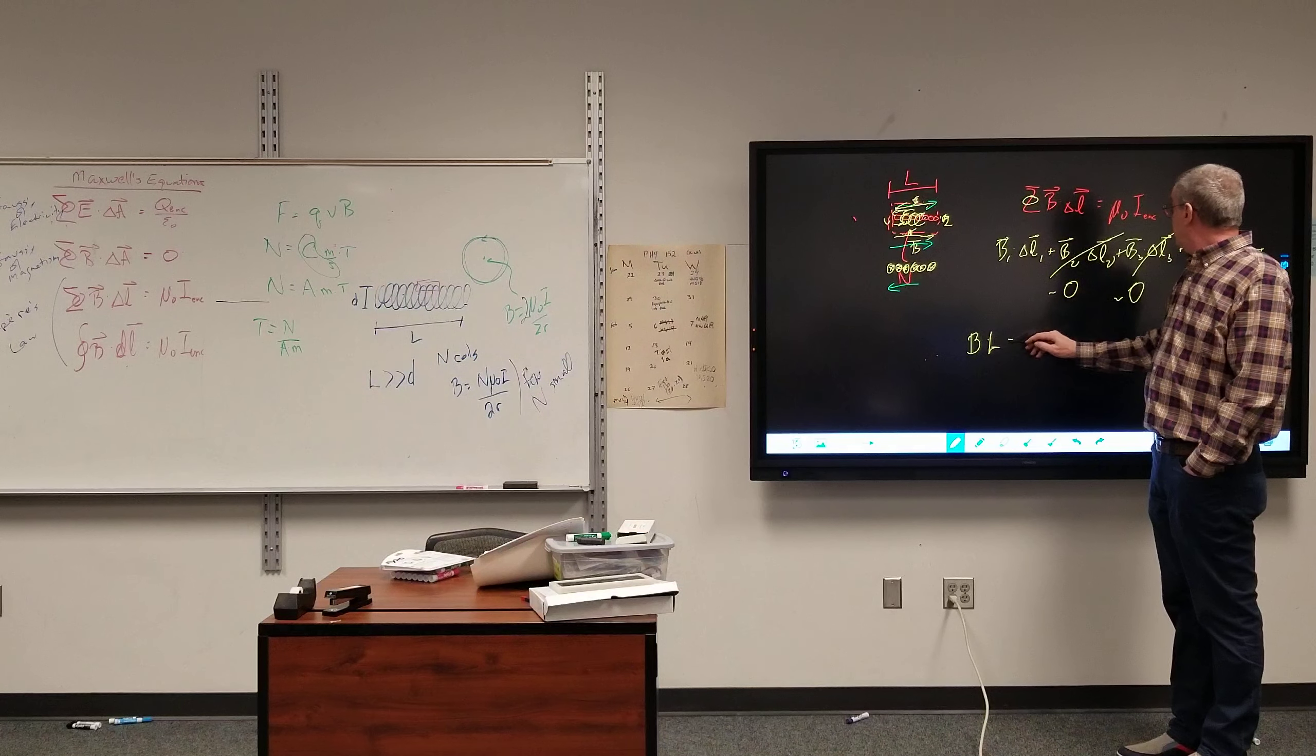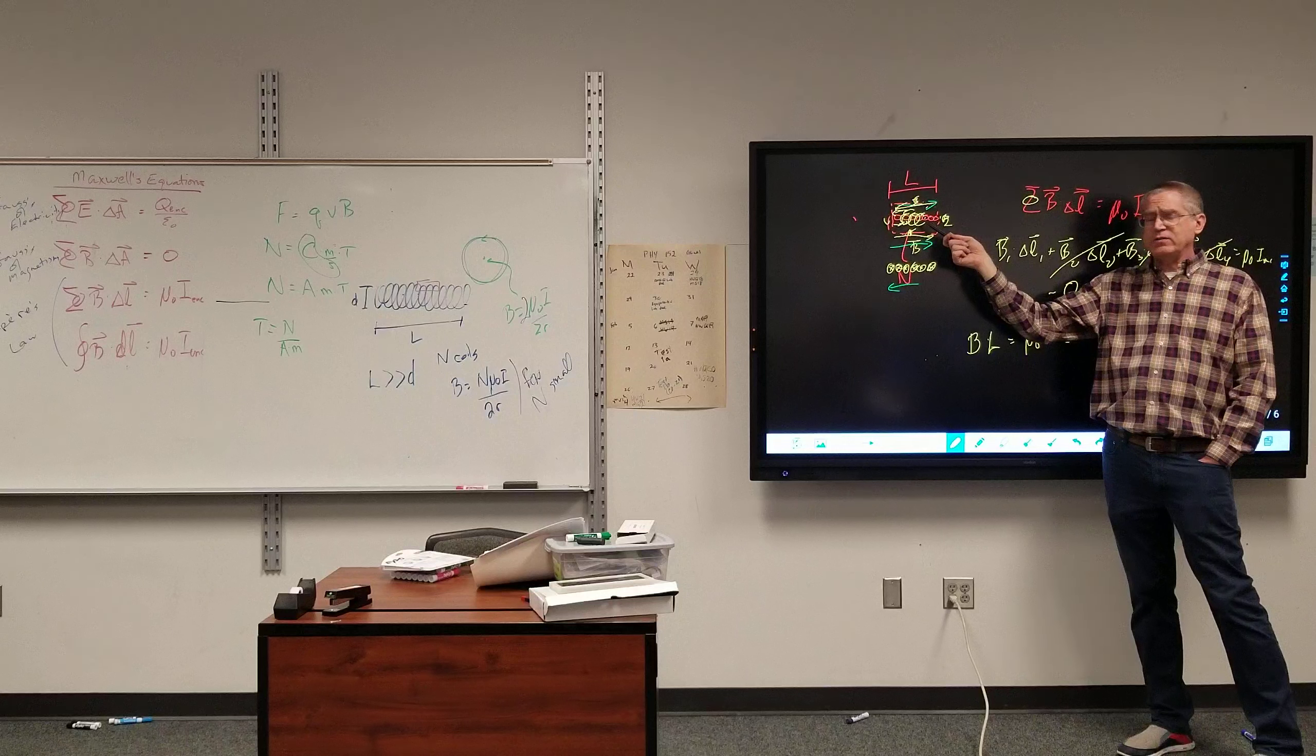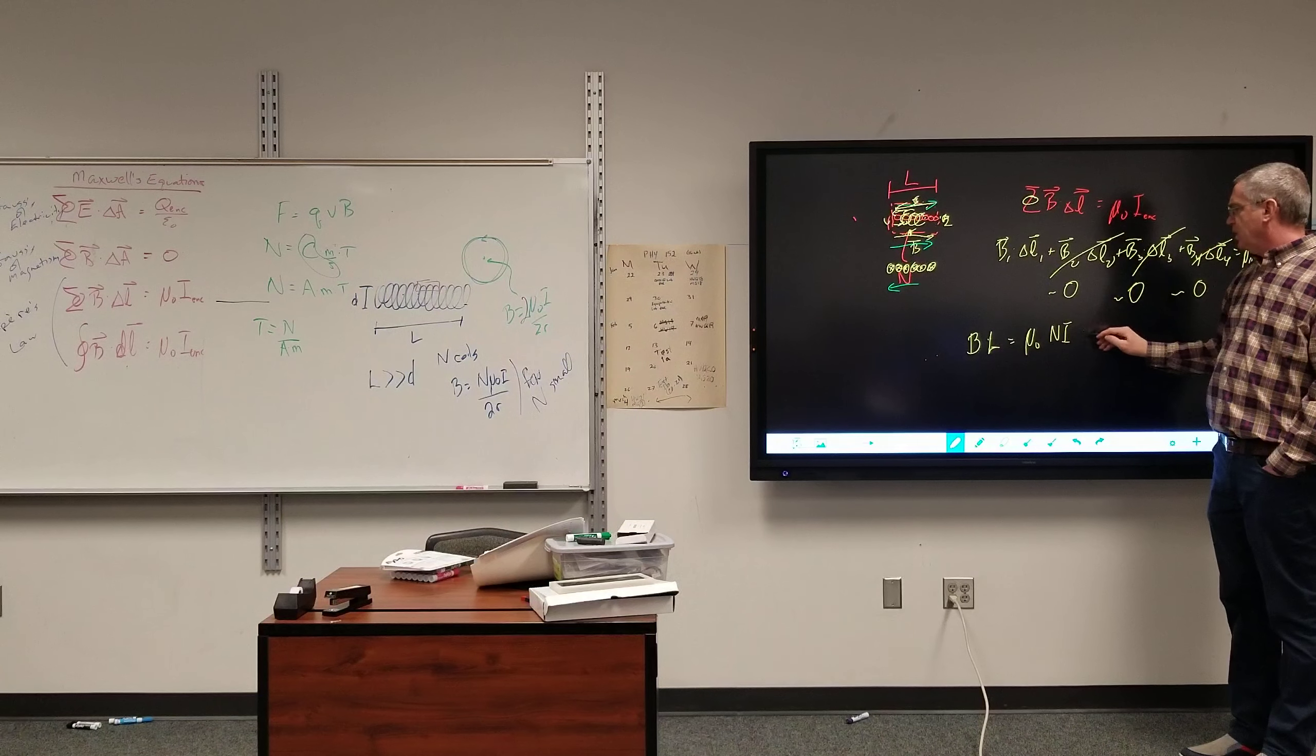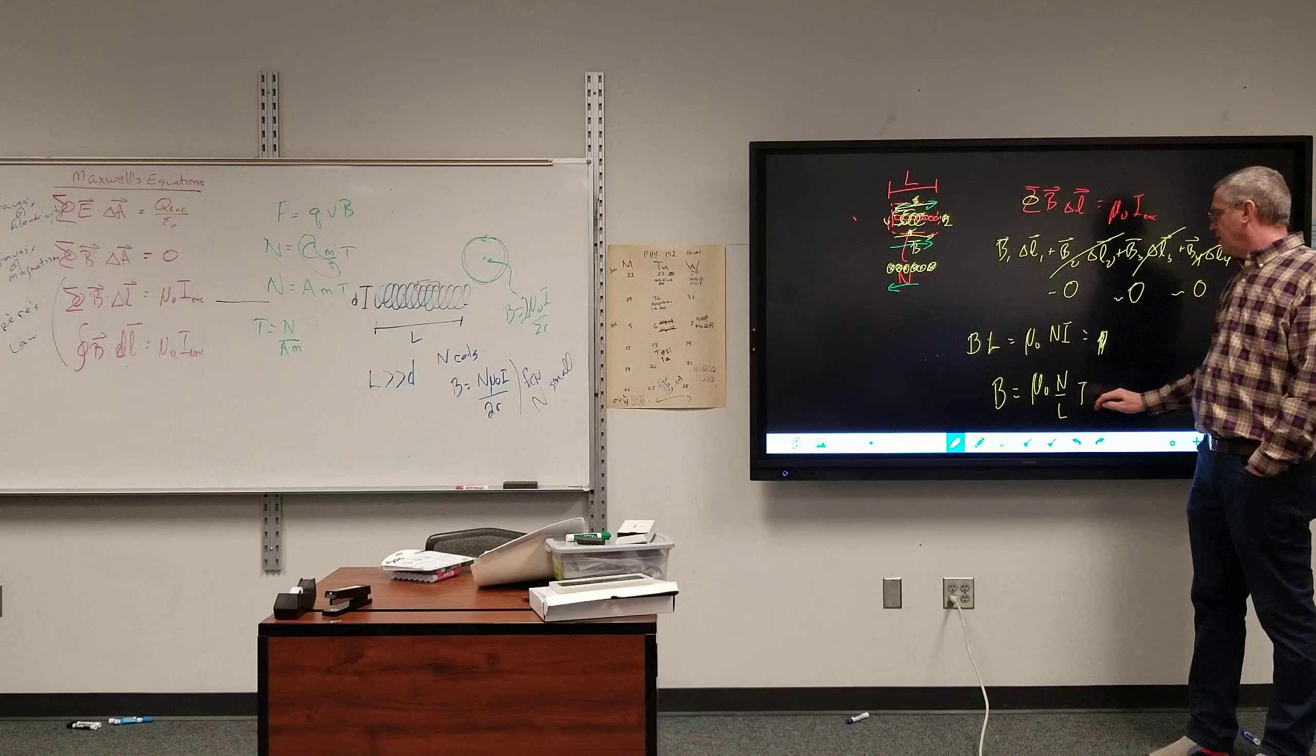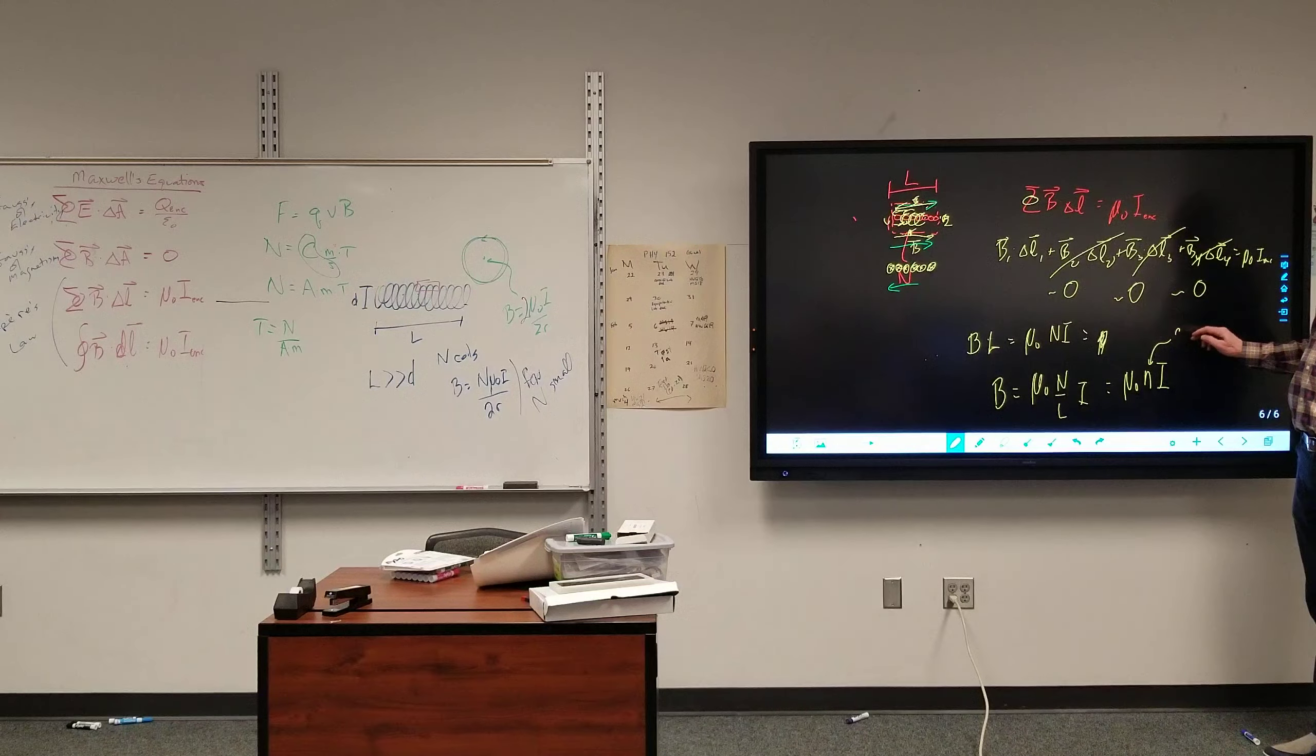DL is equal to mu naught times however many wires I've got here times the current flowing through it. Because each of these wires inside my loop here has its own current. It's all from the same wire, but it's all the same current. So however many wires I've got, I've got N wires. So this becomes, so my magnetic field inside the solenoid, mu naught times N over L times I, which is mu naught times little n I, where this is the coil density.